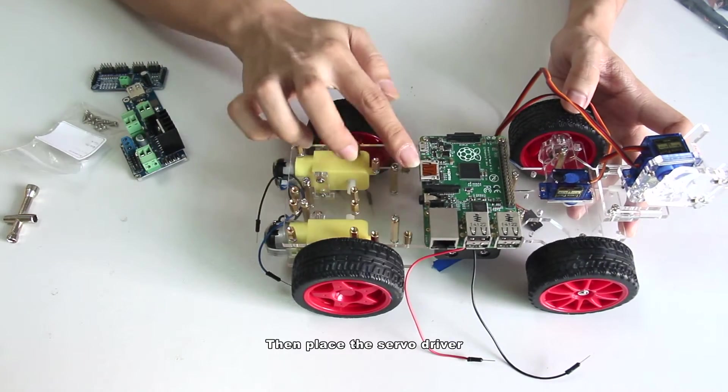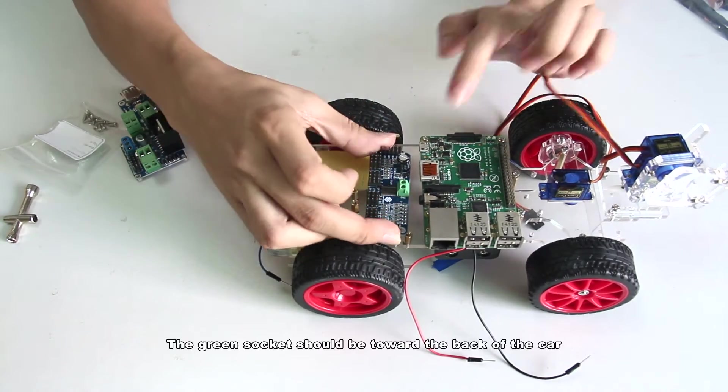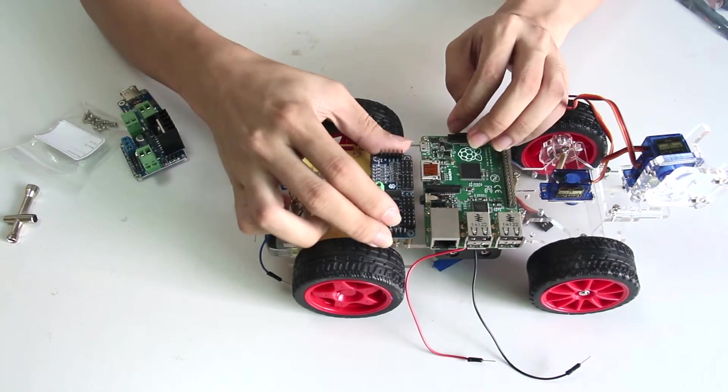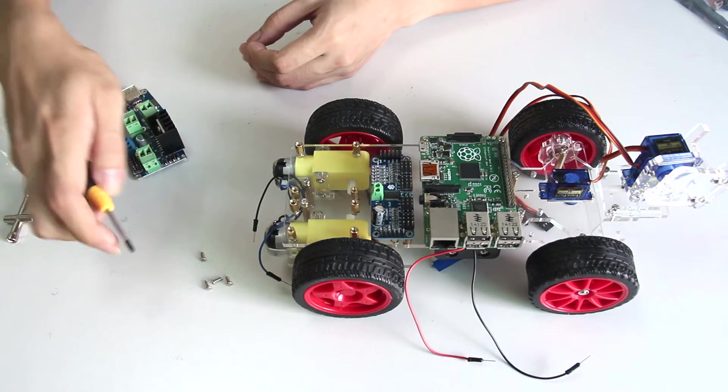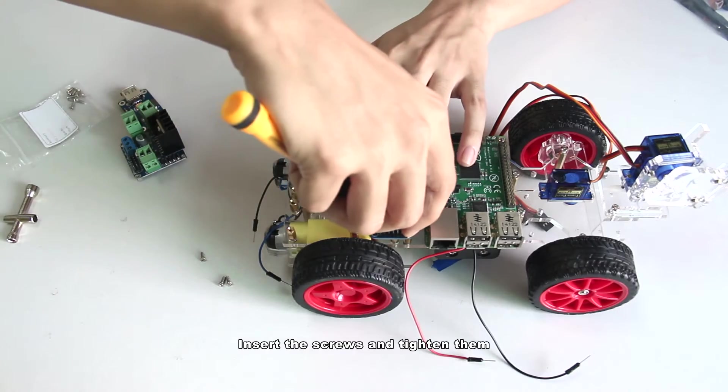Then place the servo driver. The green socket should be toward the back of the car. Insert the screws and tighten them.